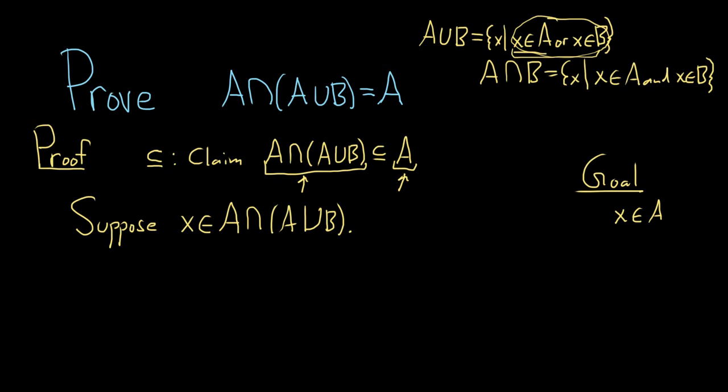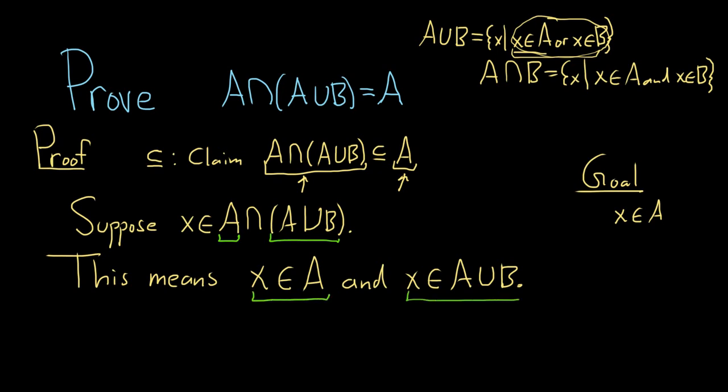So what does it mean for X to be in the intersection? This means that X is in A, and, the intersection gives us the and, X is in A union B. Because if X is in the intersection of these two sets, it means it's in the first set, and it means it's in the second set. Well, notice we have what we wanted here. We have X in A.